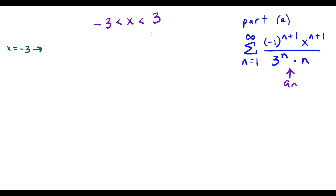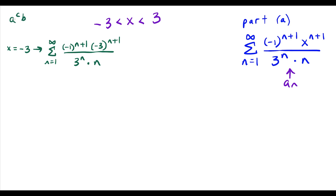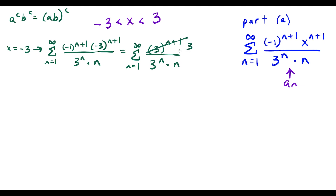We're going to plug in x equals negative 3 to our series from part A, giving us the series from n equals 1 to infinity of negative 1 to the n plus 1 times negative 3 to the n plus 1, divided by 3 to the n times n. Using the rule that a to the c times b to the c equals (a times b) to the c, we combine the matching exponents: negative 1 times negative 3 is positive 3 to the n plus 1 on top, and 3 to the n times n on bottom. So 3 to the n plus 1 over 3 to the n simplifies to 3 on top, and this series diverges — it's the constant 3 times the harmonic series 1 over n.